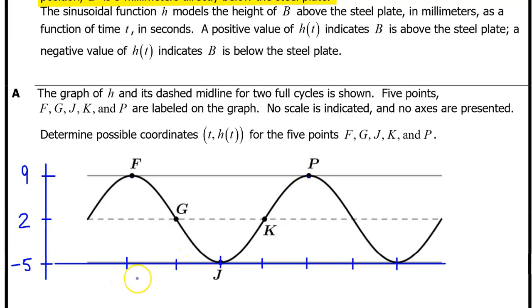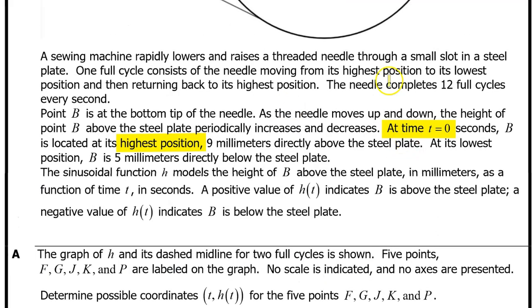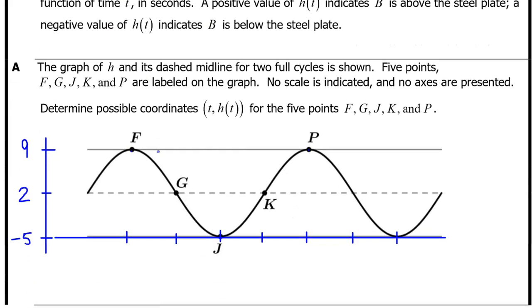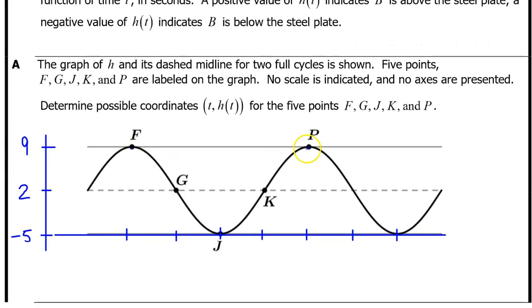Next, we will try to determine the input values for each of the five points. At t equals 0, B is at its highest position. So we need to pick one of these high points and call it t equals 0. Let's call the input value of point F, t equals 0.